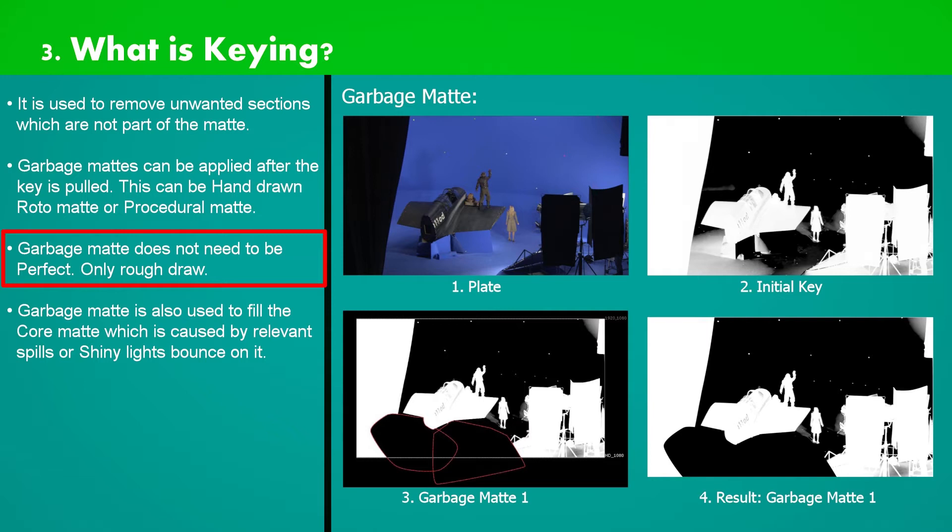Garbage mattes are used to remove unwanted sections which are not possible for keying methods to remove. Let's see this example here.